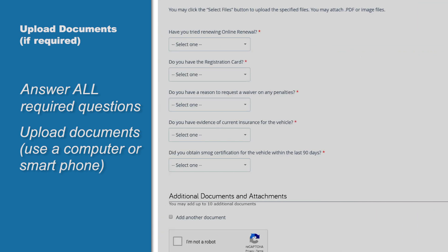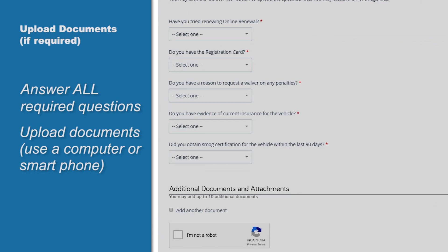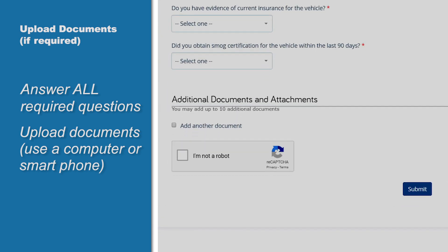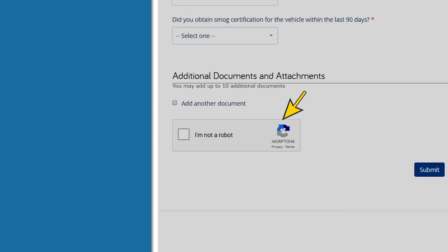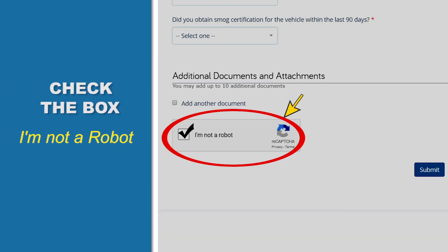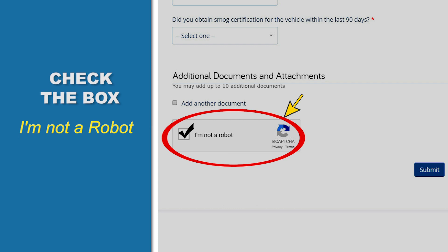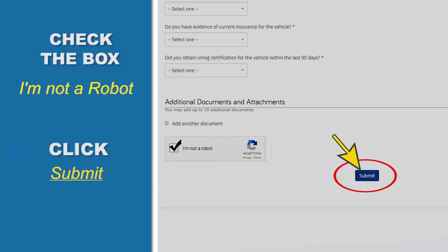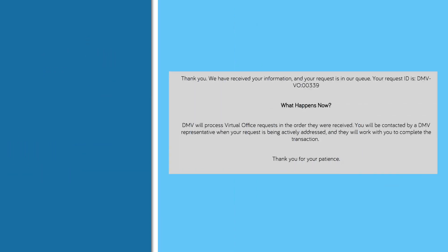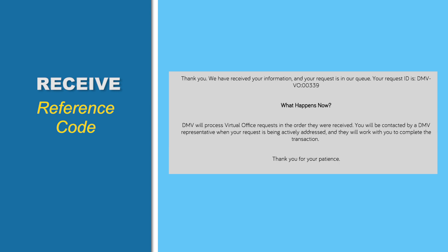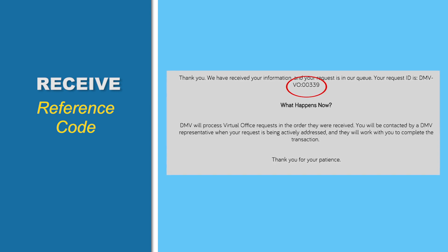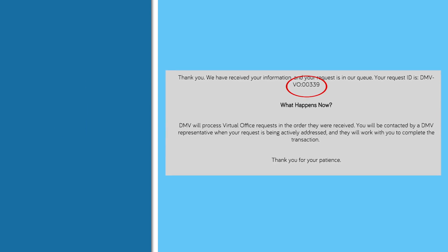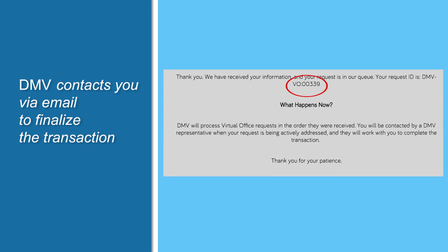When you have finished this online form, check the box next to I'm not a robot. Then click Submit. You'll receive a reference code, similar to the one on the screen, and it'll be sent to your email address.